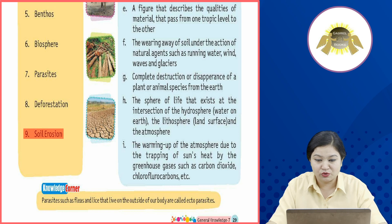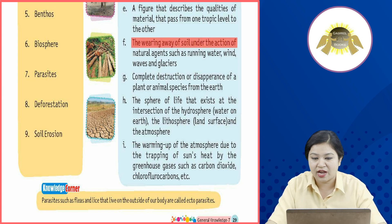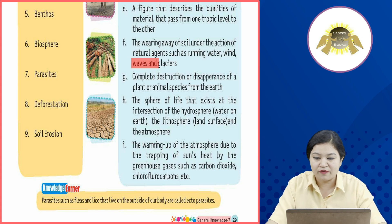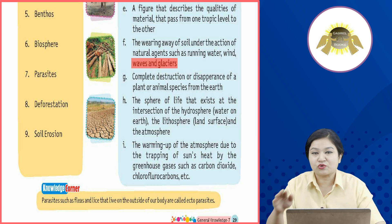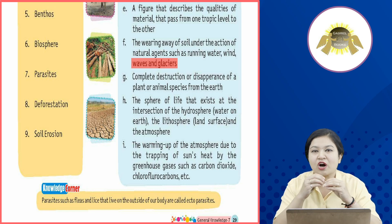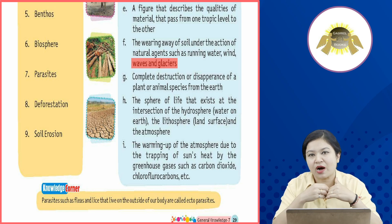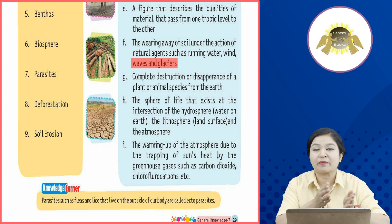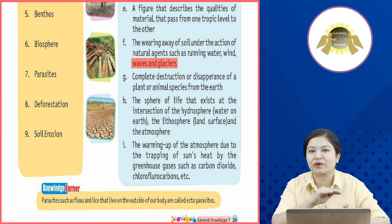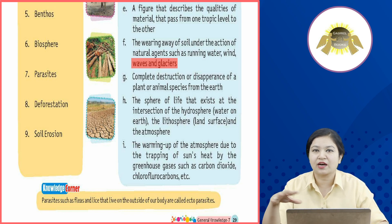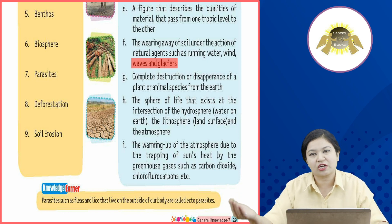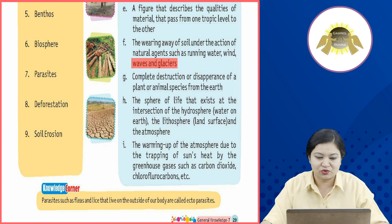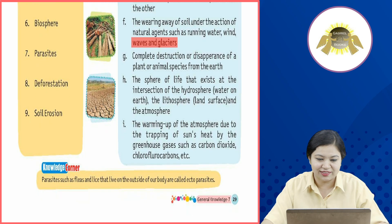9th: Soil Erosion. Soil erosion का मतलब — the wearing away of soil under the action of natural agents such as running water, wind, waves and glaciers. Soil के ऊपर की परत हवा या पानी के द्वारा बहा ली जाती है। एक जगह से soil की ऊपरी layer हवा या पानी के through दूसरी जगह ले जाई जाती है — इसलिए उसे soil erosion कहते हैं।